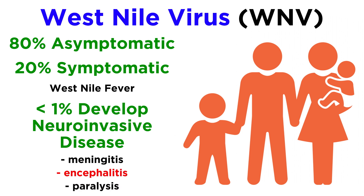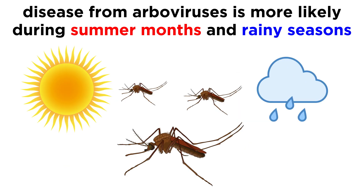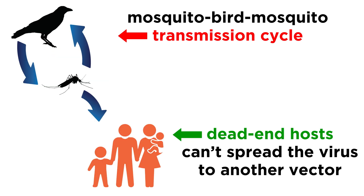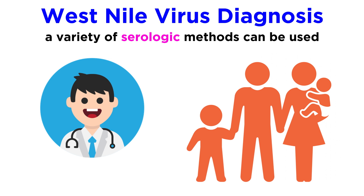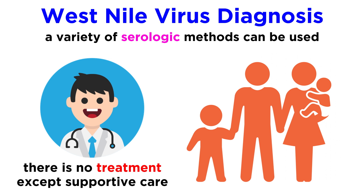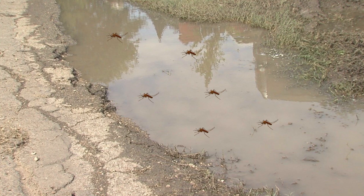The risk for encephalitis is higher for those who are older or have received an organ transplant. When it comes to arboviruses, disease is more likely to occur during the summer months and rainy seasons, which is when mosquitoes breed and cycle among bird populations. Humans are considered dead-end hosts, because we can't spread the virus to another vector, mainly because these viruses don't maintain a persistent viremia. A general rule of thumb is that if the virus is not in the blood, a mosquito cannot acquire it. There are a variety of serologic methods that can be used to diagnose West Nile virus infections, though no treatments exist other than supportive care. Even though we have vaccines available to prevent West Nile virus infection in horses, we don't yet have a West Nile virus vaccine licensed for use in humans. At the moment, the best defense we have against arboviruses is eliminating their vectors and breeding grounds.